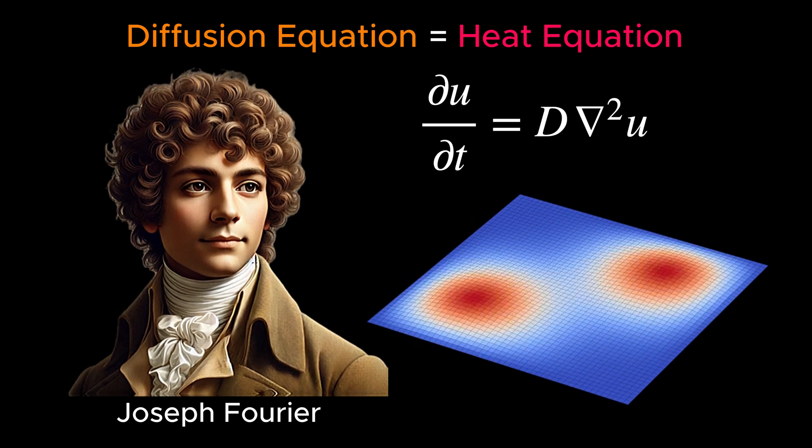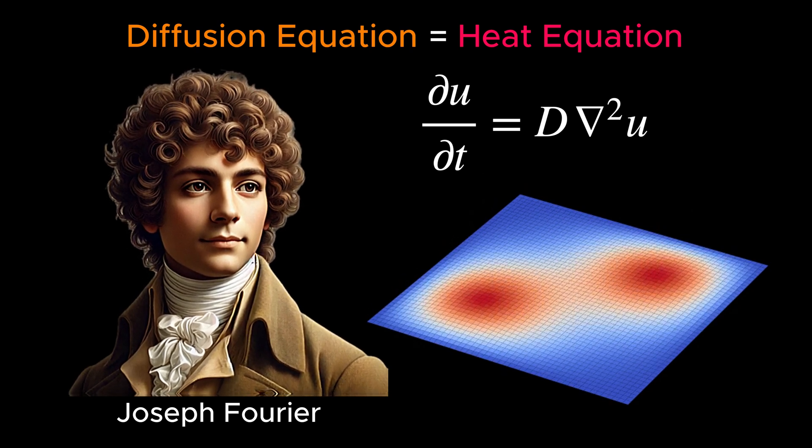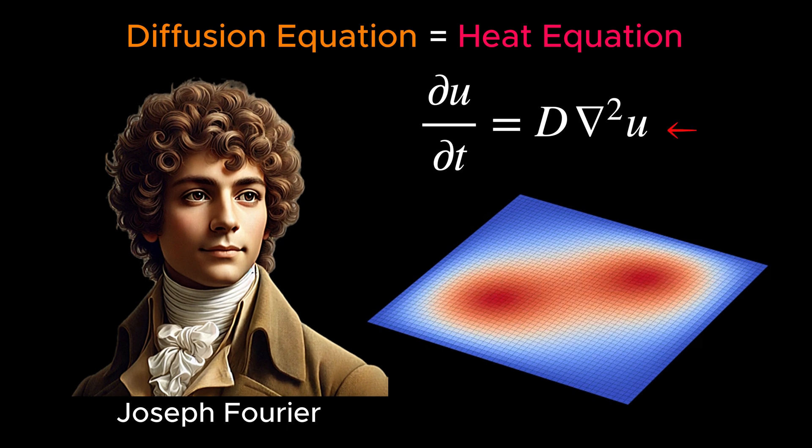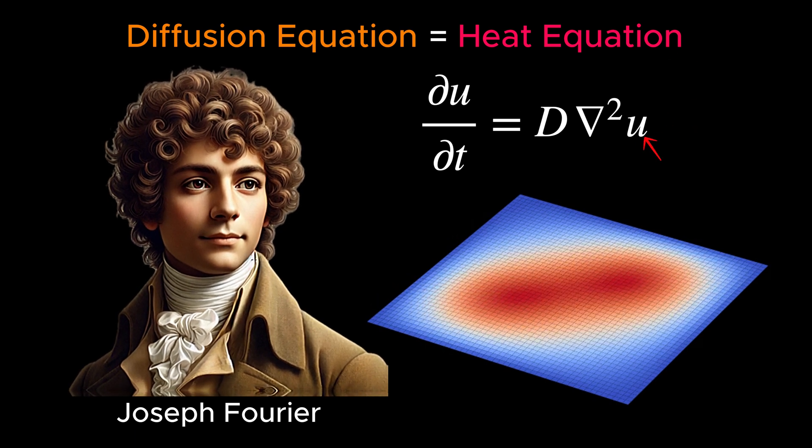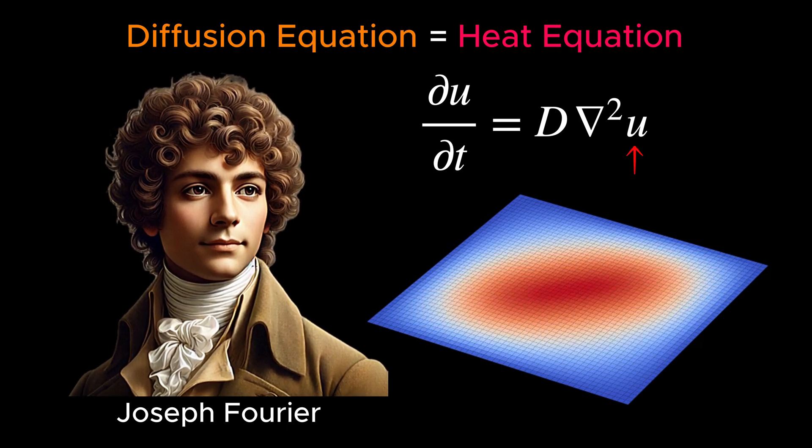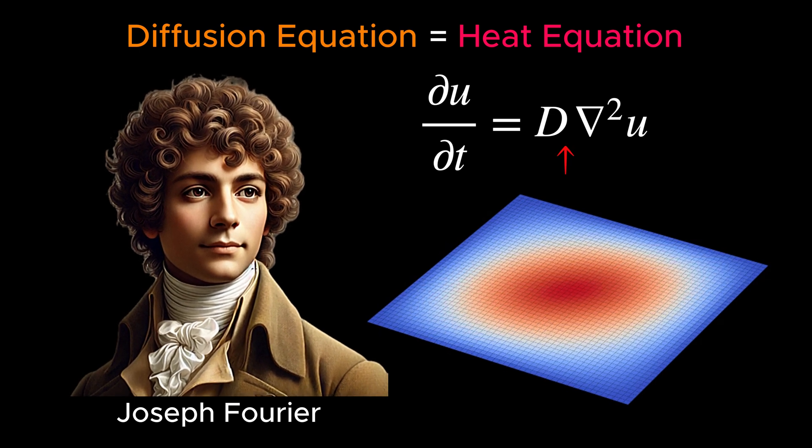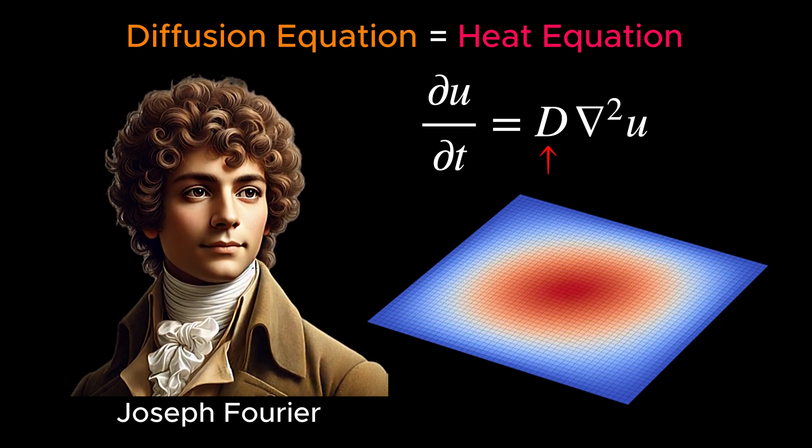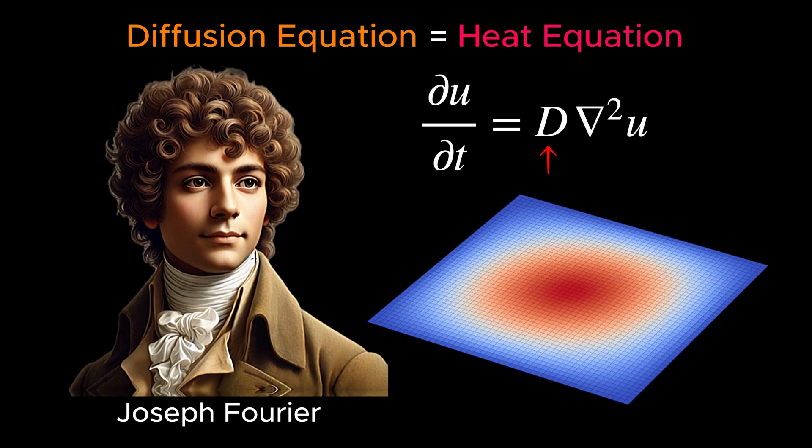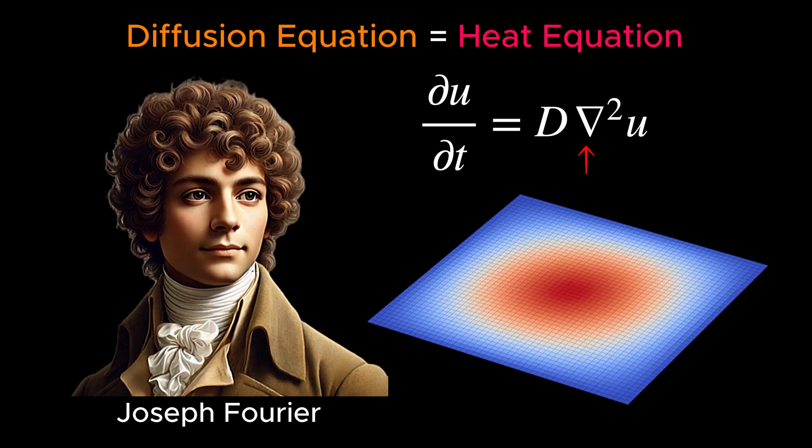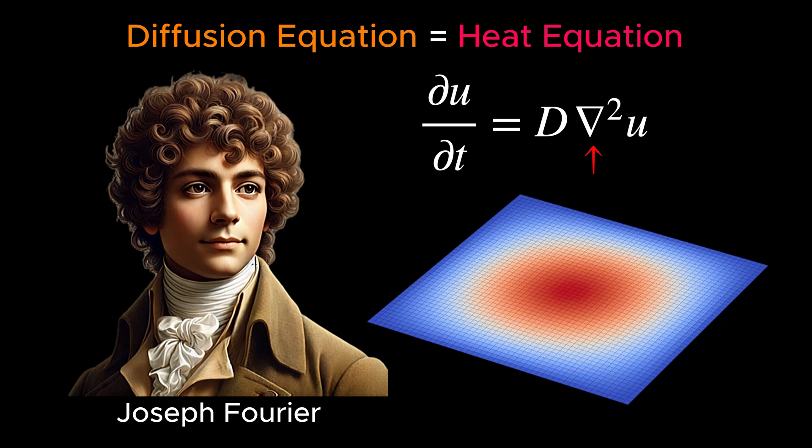Fourier developed this equation to describe the distribution of heat in a given region over time, laying the groundwork for the mathematical study of heat conduction. The equation is a partial differential equation where U represents the quantity of interest, for example, concentration, D is the diffusion coefficient, a measure of how quickly the substance spreads,